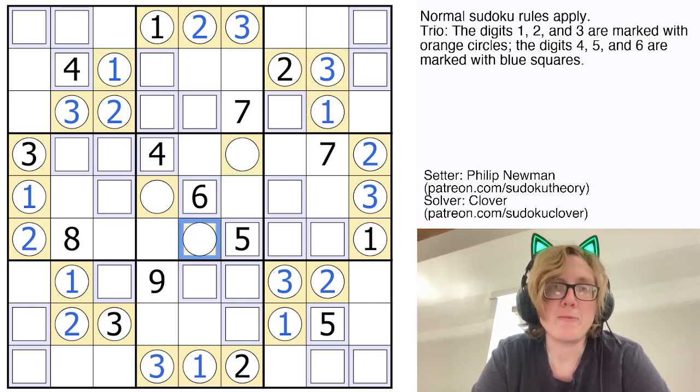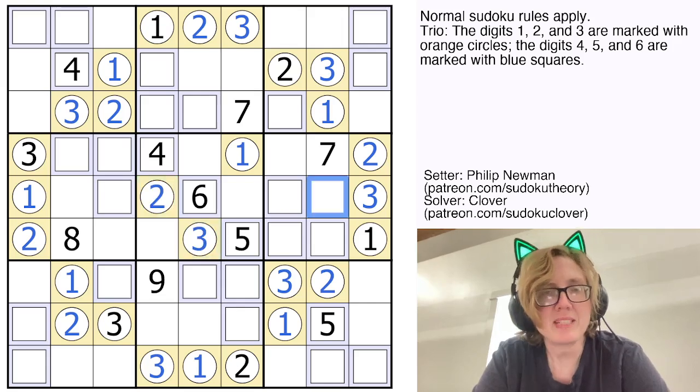Now just these 3 in the middle to go. This sees a 2 and a 3 in the row, so that's a 1. This sees 1 and 3 in the column. And then that's going to be a 3.